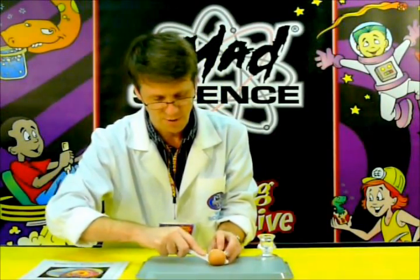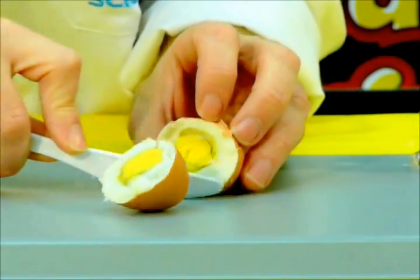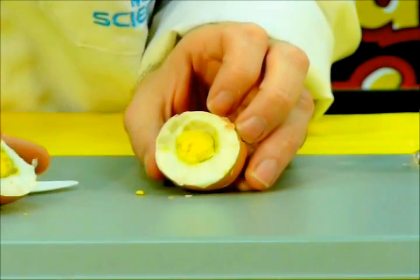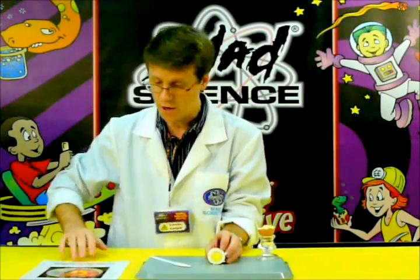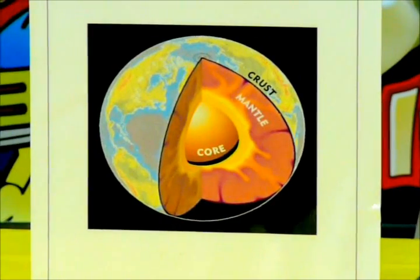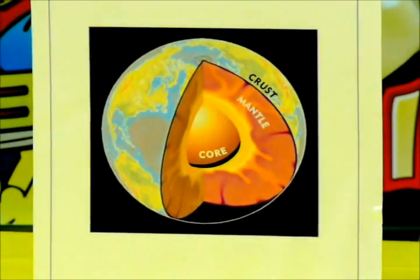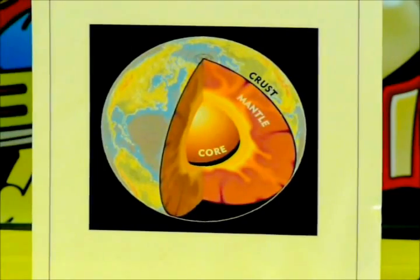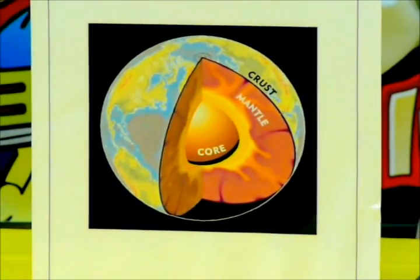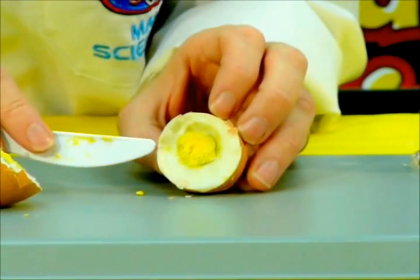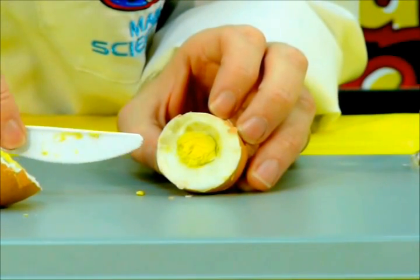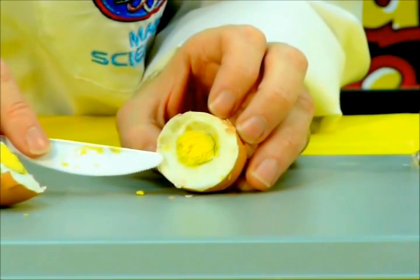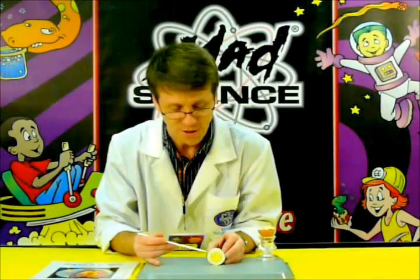If we take a cross-section of a hard-boiled egg, this would also be a very good example of the cross-section of the Earth. For example, if you compare both of these: the shell of the egg represents the Earth's crust, which is where the rocks on the Earth are typically found. The white of the egg represents the mantle of the Earth, which is made of molten rock. The yolk of the egg represents the Earth's core, which is made of white-hot metal. So, of the three choices, the egg would probably make the best model for studying the layers of the Earth.